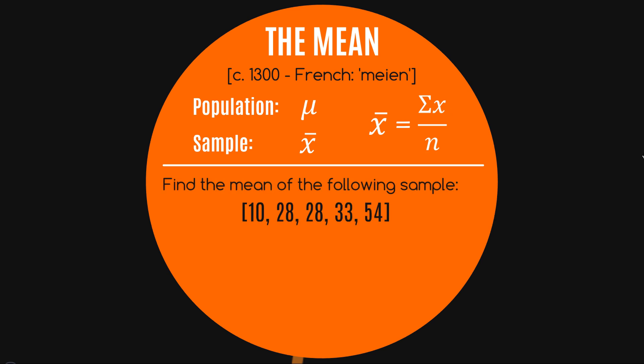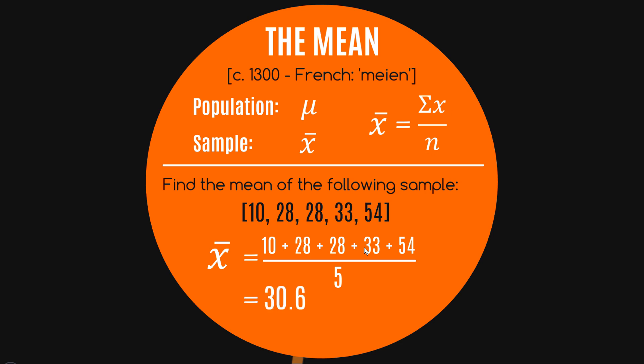Let's have a look at the mean in action. If you're trying to find the mean of the following sample — 10, 28, 28, 33, and 54 — it's as simple as adding them up and dividing by five, because of course there are five observations. It turns out the mean is 30.6, so we'd say the mean of this sample is 30.6.